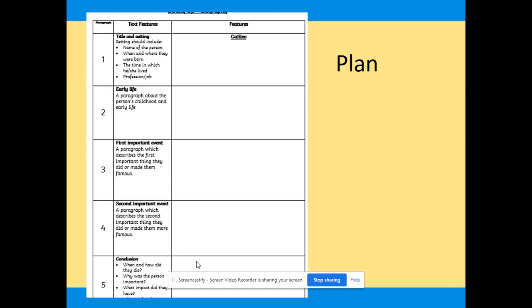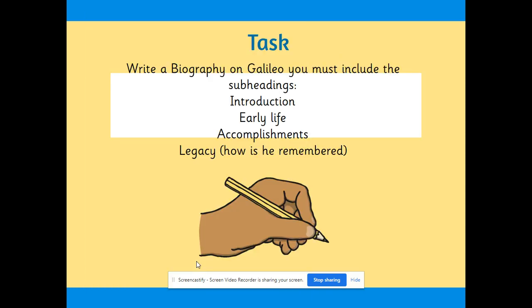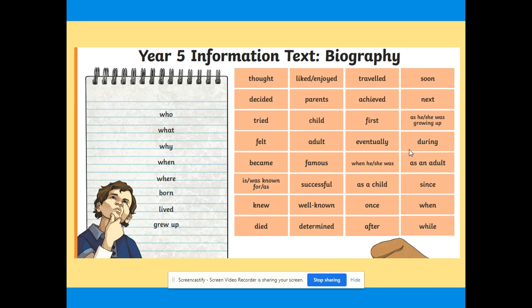Here are some subheadings you could use: introduction, early life, accomplishments, and legacy. How is Galileo remembered? Why do we have him as a house team name? Why is he still so important? What did he do? Here is also a word bank that you could use when writing up your biography.